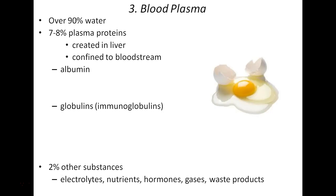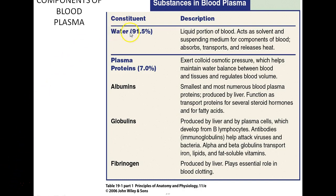Water is the liquid portion — the solvent and suspending medium for all the substances dissolved in it. Plasma proteins exert a colloid osmotic pressure that draws fluid into the blood, preventing excess fluid loss between capillaries and interstitial fluid. Albumins are the most abundant plasma protein; their main function is to exert osmotic force, controlling blood viscosity, and they also transport fatty acids and hormones.